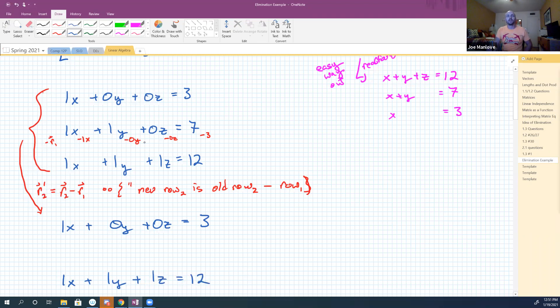That second row I'm just going to do these additions, right? So I'm going to get one x minus one x is zero x's. I'm going to go just a second past time, sorry. And then one y minus zero y is going to give me one y. Zero z minus zero z is going to give me zero z. Seven minus three is four. You guys with me on that?